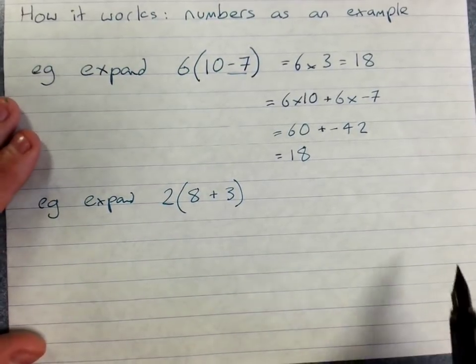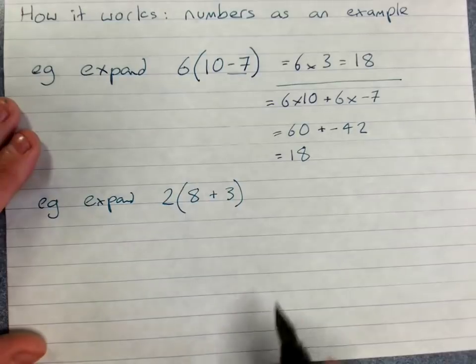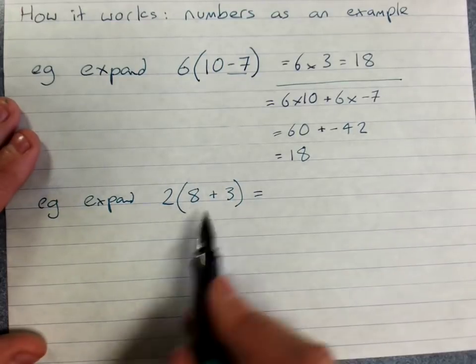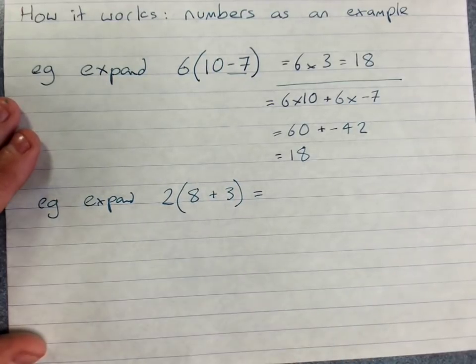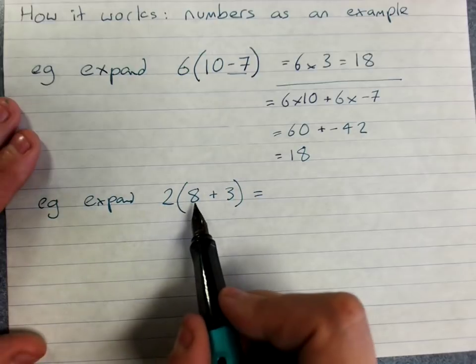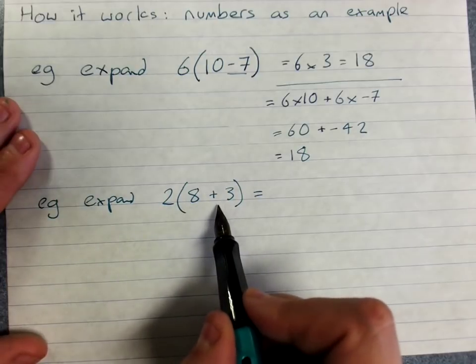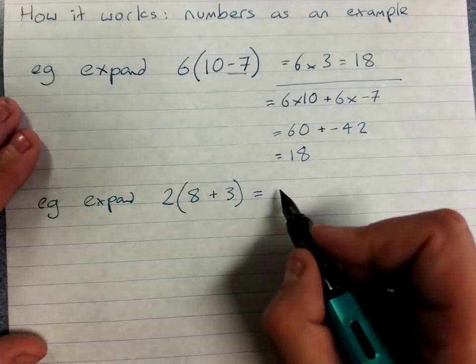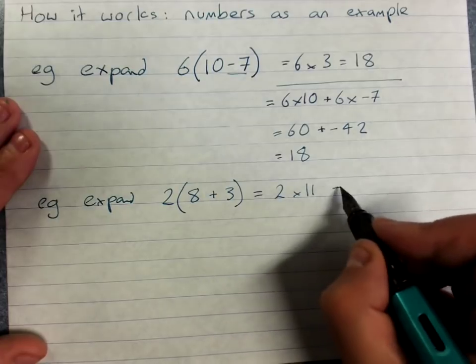So we're going to do this two different ways. The first way is the sum in the brackets. So 8 plus 3 has to happen first, that's 11. This will be 2 times 11 which will be 22.